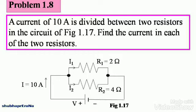A current of 10 amps is divided between two resistors in the circuit of figure 1.17. You can see this figure. Find the current in each of the two resistors. So R1 is 2 ohm, R2 is 4 ohm.